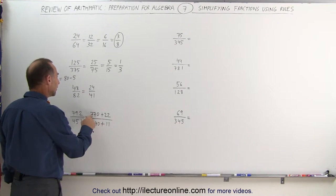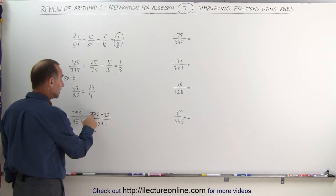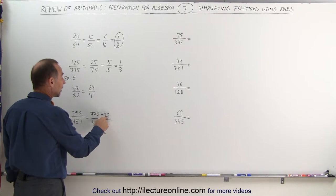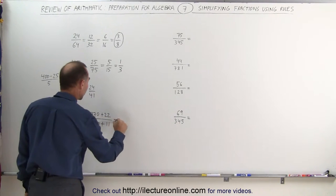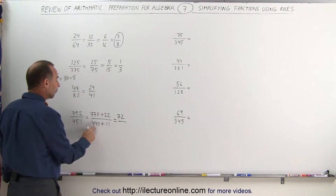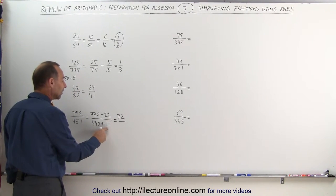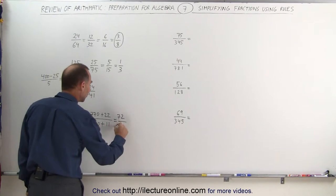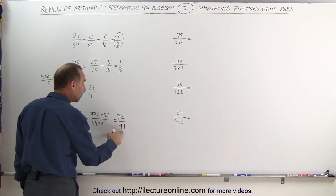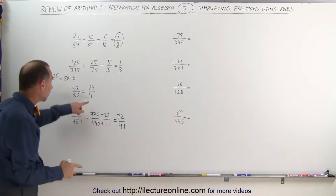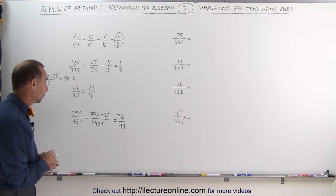770 divided by 11 is 70. I add 22 divided by 11, which is 2, so this becomes 72. And in the denominator, 440 divided by 11 is 40, plus 11 divided by 11 is 1, that gives me 41. Since the denominator is a prime number, just like here, I cannot simplify that any further.